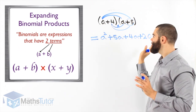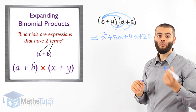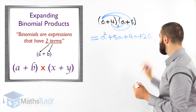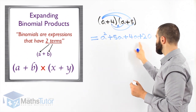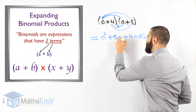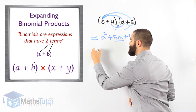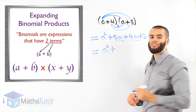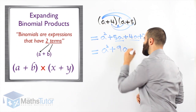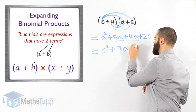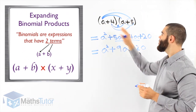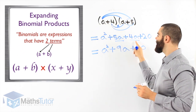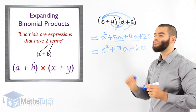Now we have expanded. Do we simplify? Well, it depends if we can simplify or not. It's very important in algebra to look at whether we can simplify and collect like terms. Do we have any like terms here? Yes, we do. That's a like term and that's a like term — we can add them up. A squared plus five A plus four A is nine A, then plus twenty. We have now expanded our binomial products. We expanded and we collected like terms. This is our final answer.